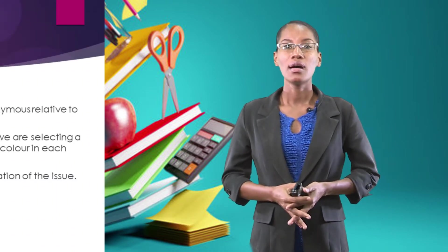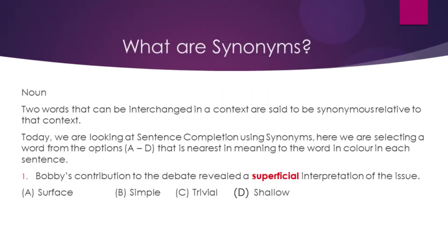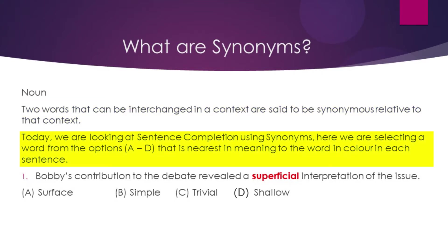What are synonyms? It's a noun — the two words that can be interchanged in a context are said to be synonymous relative to that context. Today we are looking at sentence completion using synonyms, and here we are selecting a word from the options A to D that is nearest in meaning to the word in colour in each sentence.